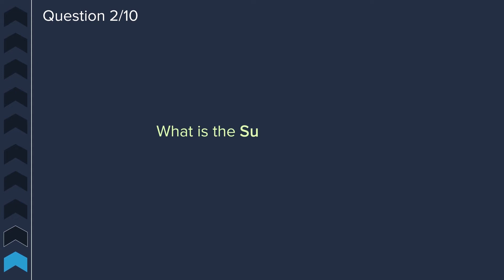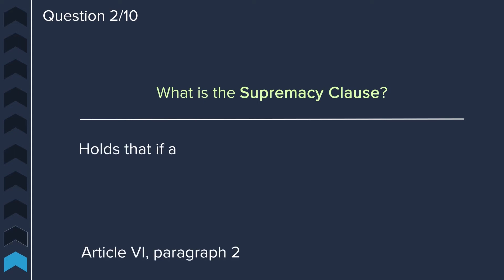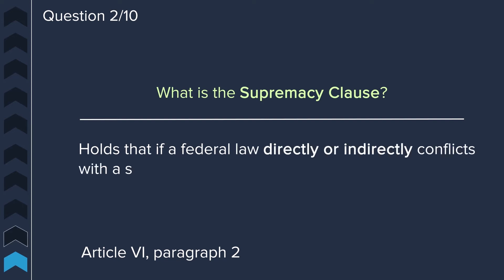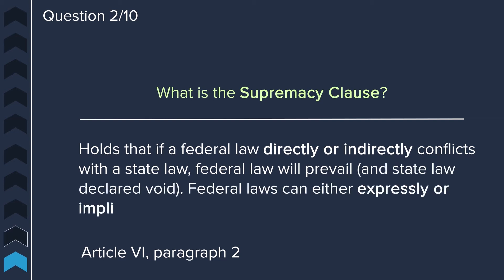Question two. What is the Supremacy Clause? The Supremacy Clause, found in Article 6, Paragraph 2, holds that if a federal law directly or indirectly conflicts with state law, the federal law will prevail and the state law will be declared void. Federal laws can either expressly or impliedly preempt state law.